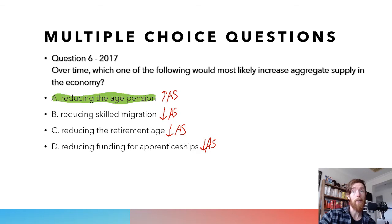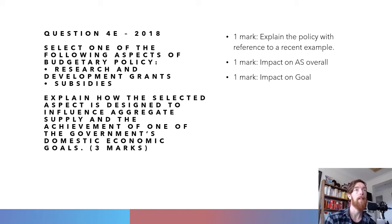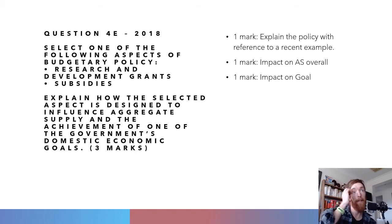Now let's move on to some short answer questions. Question four from 2018: select one of the following budgetary policies — research and development grants or subsidies — and explain how the selected aspect is designed to influence aggregate supply and the achievement of one of the government's domestic macroeconomic goals, for three marks. One mark from explaining the policy with a recent example, one from the impact on aggregate supply and productive capacity, and one from the impact on the goal with its definition.